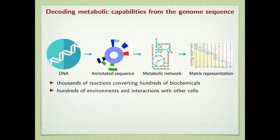This network can have thousands of reactions converting hundreds of chemicals or metabolites. This network is then formulated as a matrix where rows represent metabolites and columns represent the reactions.